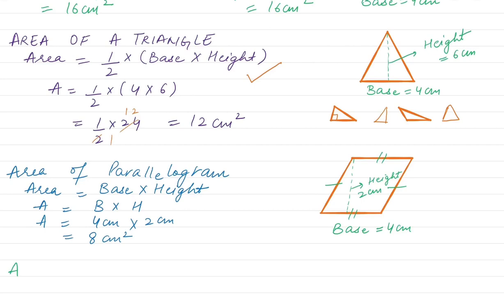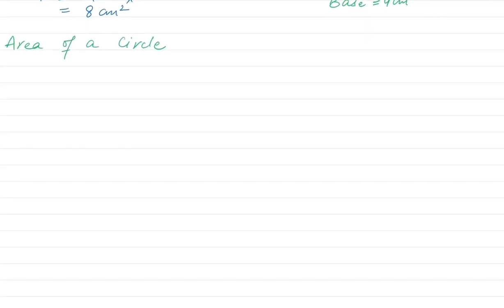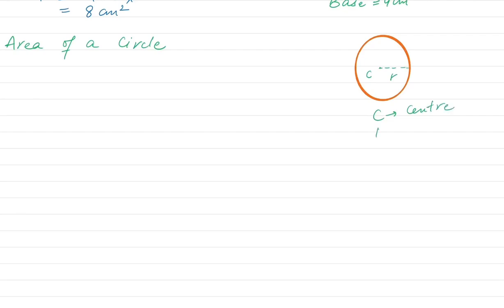Now let's draw one more shape: the area of a circle. For finding the area of the circle, let's draw a circle first. Let's mark the center, taken as C, and draw a line — this is the radius, taken as R. You can use capital R or small r, but mostly we prefer small r. The area of a circle is equal to pi r squared. Pi is equal to 3.14 or 22 divided by 7 — a standard value you need to learn and remember.